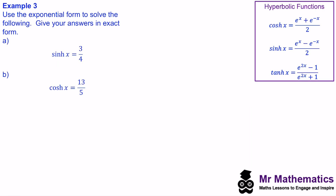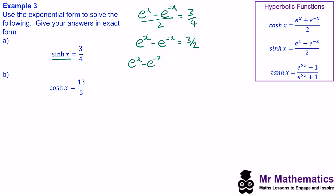In Example 3 we've been given sinh(x) = 3/4 and we've been asked to find x. To find x we convert sinh(x) into exponential form: (e^x − e^(−x)) / 2 = 3/4. We multiply both sides by 2, so e^x − e^(−x) = 3/2, then move 3/2 to the left-hand side to equal zero. We then multiply both sides by e^x: multiplying e^x by e^x adds the powers to give e^(2x).